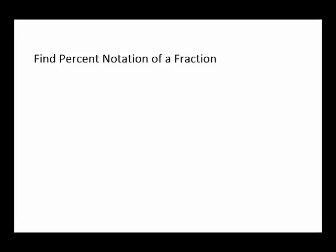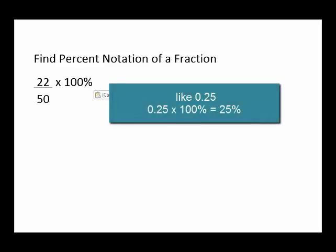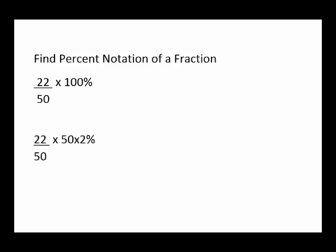Now we'll do some problems where we need to find the percent notation of a fraction. Here we have 22 over 50. Just as if we had a decimal value which we would multiply by 100%, we multiply the fraction by 100%. We could simplify this by canceling out the 50, which is a common factor between 100 and 50. And what's left is 44%.